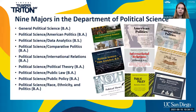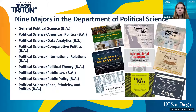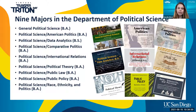We have nine majors in the department. Our newest one is the Political Science, Race, Ethnicity and Politics major, which started in fall 2020. We have one Bachelor of Science, the Political Science Data Analytics major. All of these majors have a similar number of requirements: four lower division courses and 12 upper division courses. Most transfer students will come in having completed most of the lower division courses and jump right into upper division.